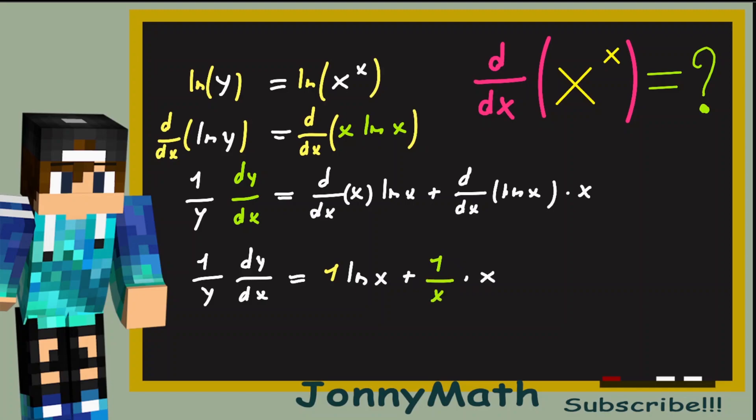And as you can see here, we can just simplify x and x, and we get 1 over y times dy over dx equals the natural log of x plus 1. But as you can see here, we still have this 1 over y times dy over dx. So how can we get rid of it?